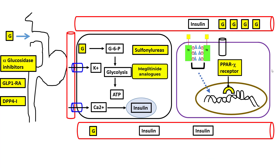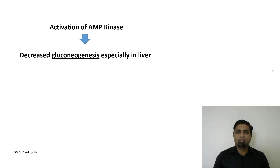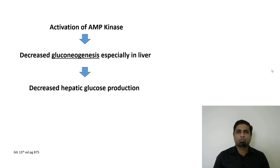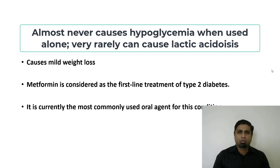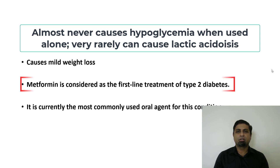The next group of drugs are the AMP kinase activators. Most cells in the body contain an enzyme called AMP kinase, and when this enzyme is stimulated, it results in a decrease in gluconeogenesis, especially in the liver, leading to decreased hepatic glucose production. This is the mechanism of action of drugs which stimulate AMP kinase, namely the biguanides, the most important example of which is metformin. Metformin is a very safe drug, causes mild weight loss, and is considered a first-line drug in the treatment of type 2 diabetes mellitus — currently the most commonly administered drug for this indication.